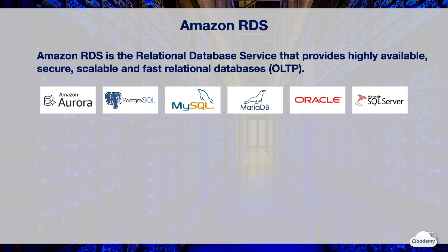Amazon RDS is the relational database service that provides highly available, secure, scalable, and fast relational database options for your OLTP applications. RDS is suited for applications that require data integrity and perform frequent transactional reads and writes. RDS offers six database engines: MySQL, PostgreSQL, MariaDB, Oracle, Microsoft SQL Server, and Aurora.